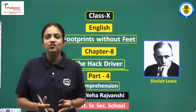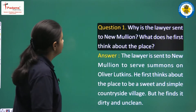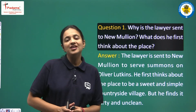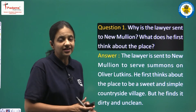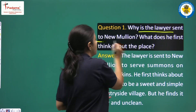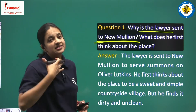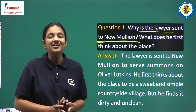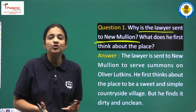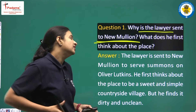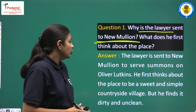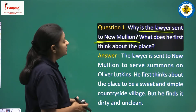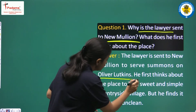Question 1: Why is the lawyer sent to New Mullion, and what does he first think about the place? We have to tell the reason why the lawyer was sent to this town named New Mullion, and secondly what was in his mind about the place. The lawyer is sent to New Mullion to serve summons on Oliver Lutkins.